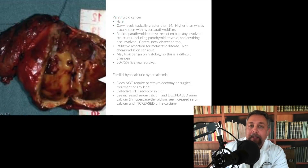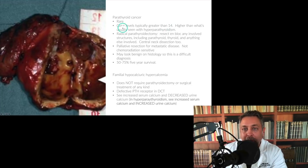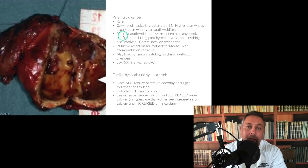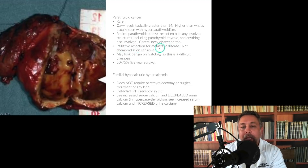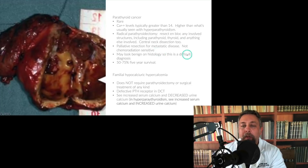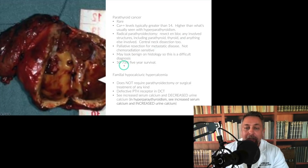Parathyroid cancer is a rare entity. Calcium levels are typically greater than 14 — if you see a calcium greater than 14, start thinking parathyroid cancer, as it's higher than what's typically seen with hyperparathyroidism. Treatment is radical parathyroidectomy, resecting and blocking any involved structures including the thyroid. Central neck dissection is typically performed alongside this. Resection for metastatic disease is palliative, and unfortunately the lesion is not chemoradiation sensitive. It may look benign on histology, making it a difficult diagnosis. Five-year survival ranges from 5% to 75%.